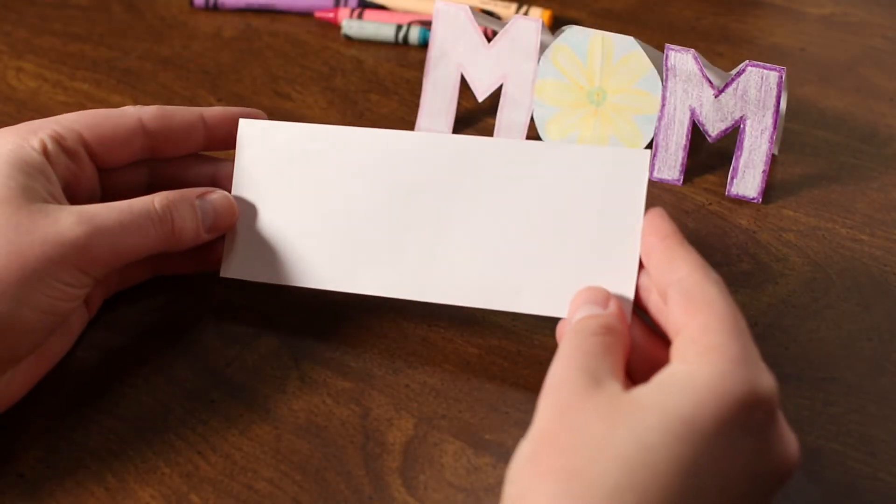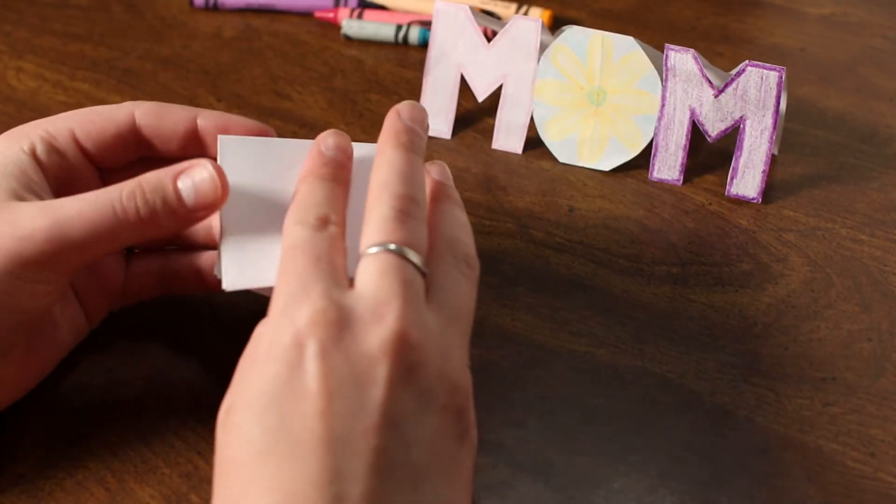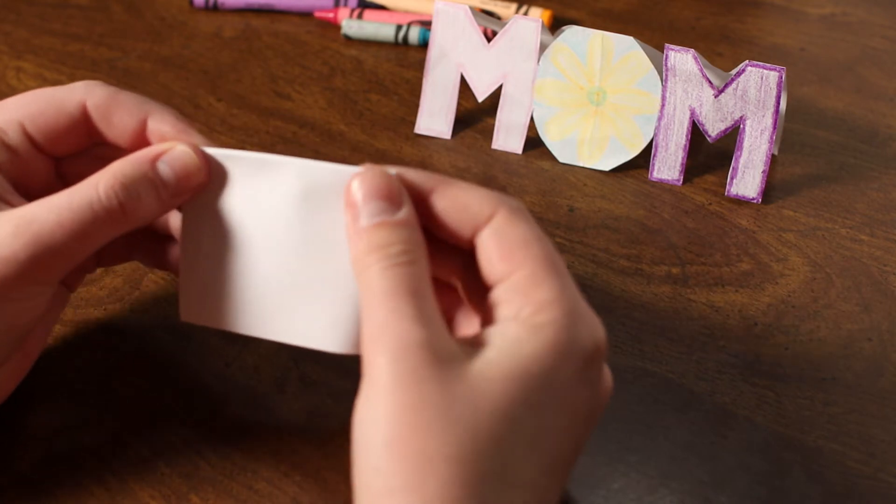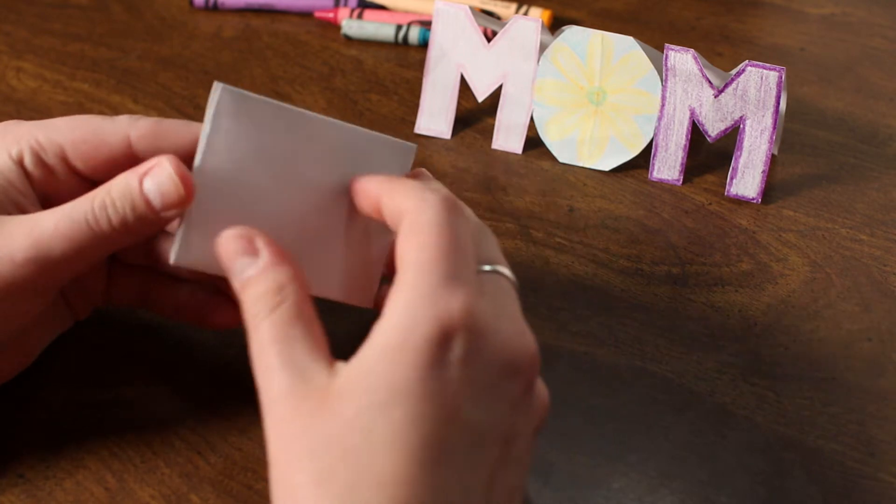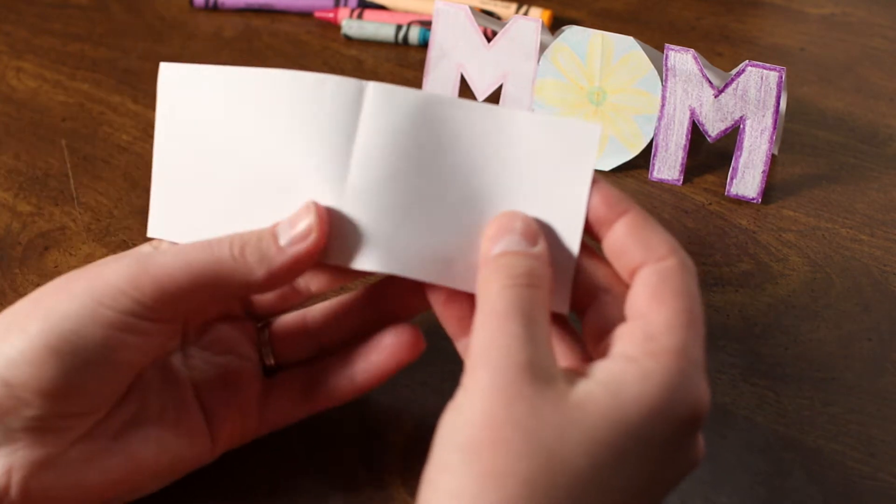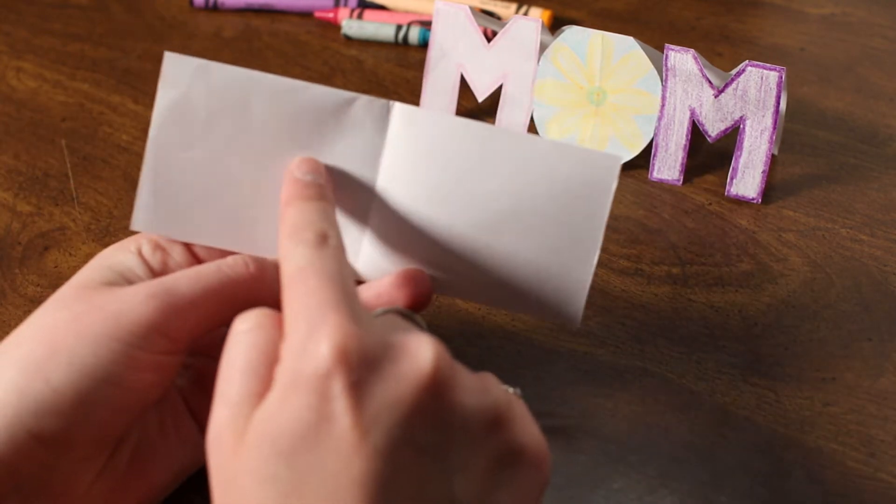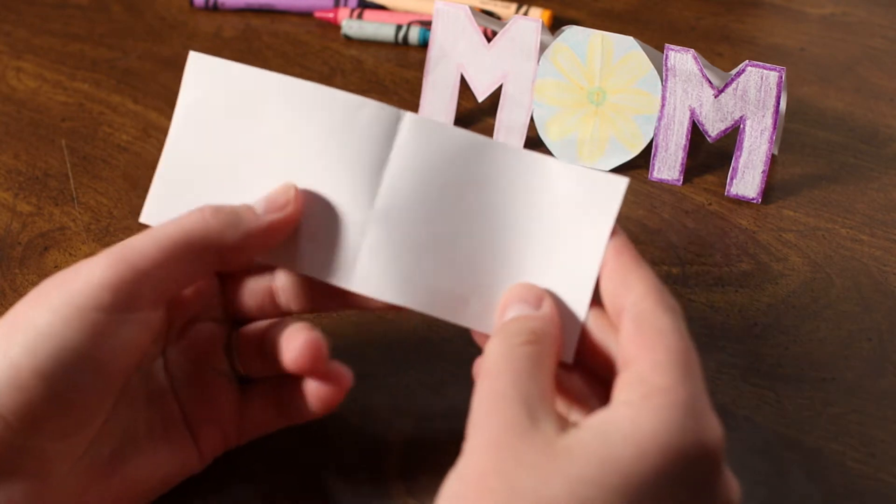We're taking our piece of paper and folding it in half. This will give us center for the O in the middle. We open it up. Here is where our O is going to be and our M's will be on either side.